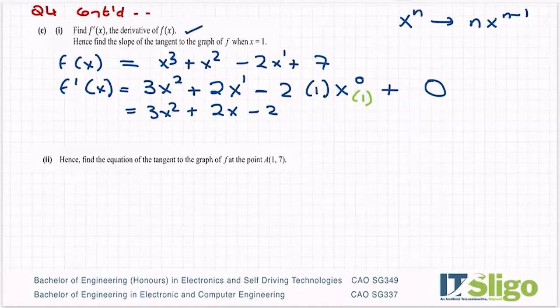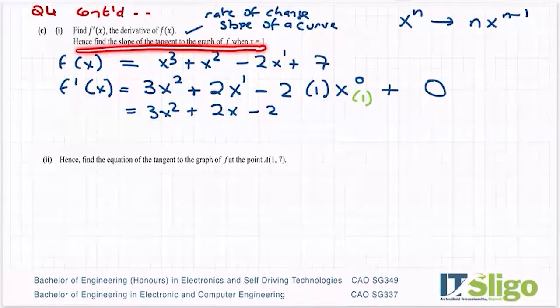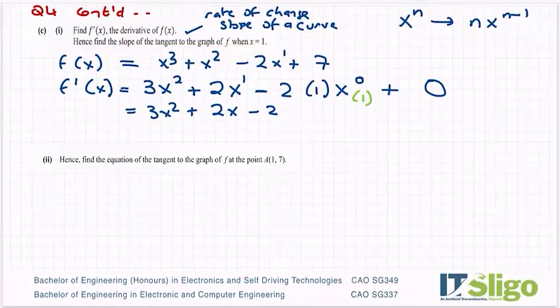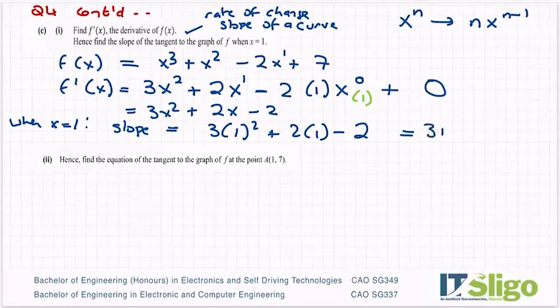Now it says, and derivative, remember, is rate of change. It can also be called that, and it can also be called slope of a curve or slope. So then it says find the slope of the tangent to the graph when x is 1. So find the slope when x is 1. So when x is 1, slope equals 3 times 1² - basically I'm subbing in the x for 1 here - plus 2 times 1 - 2. So 3 times 1² is 3 + 2 - 2, so the slope is 3.